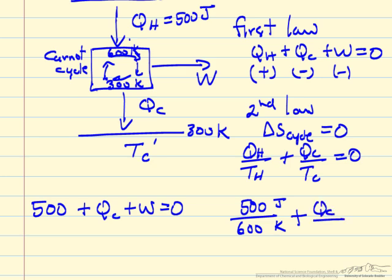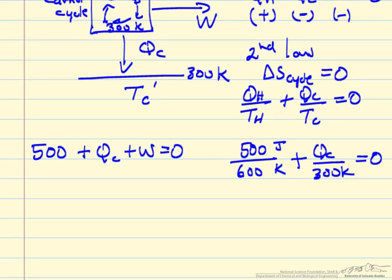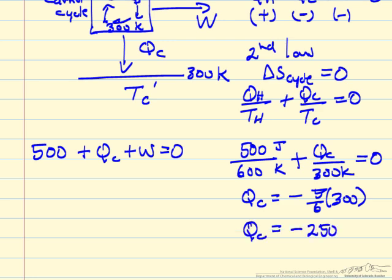QC, we don't know, the low temperature is 300 Kelvin, that's zero. So here's the two entropy changes. It means we can solve for QC. It's going to be minus 5 sixths times 300. So that's minus 250 joules.